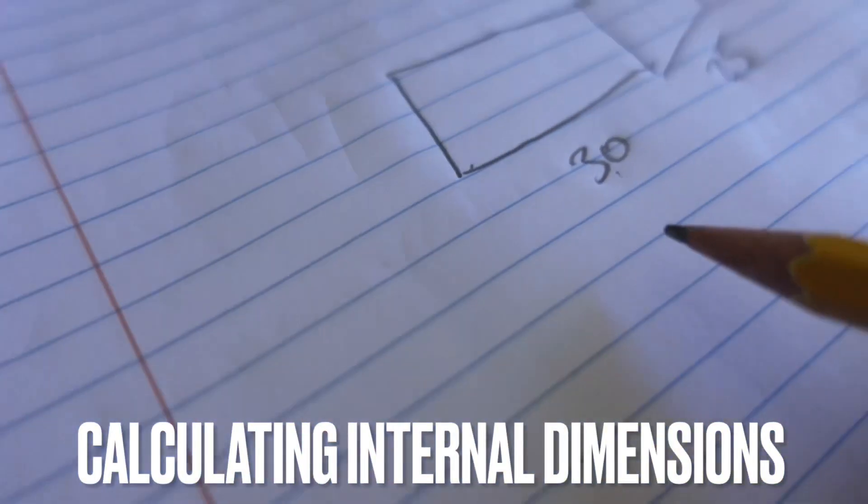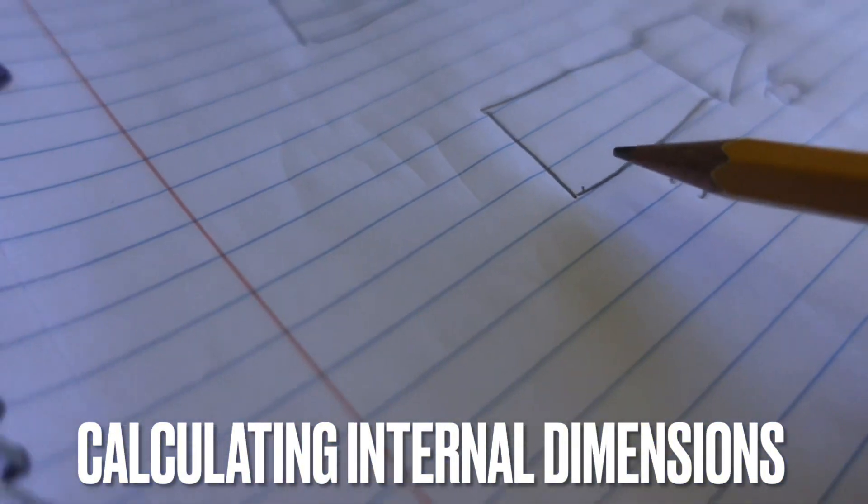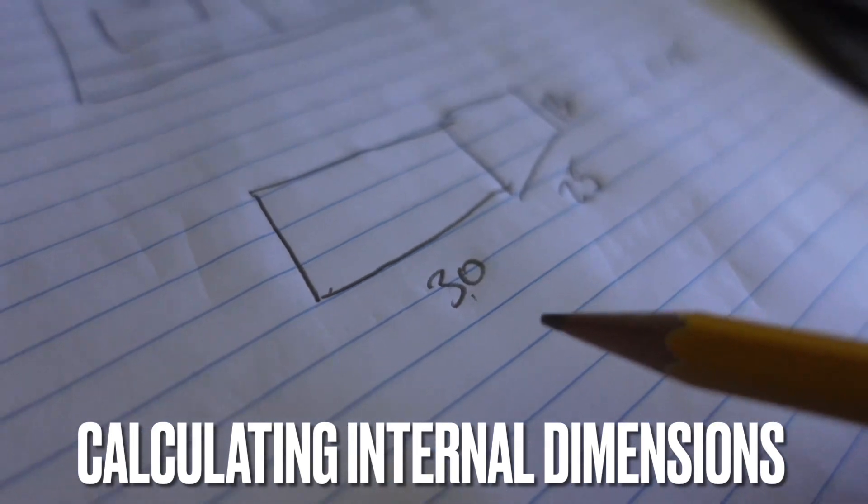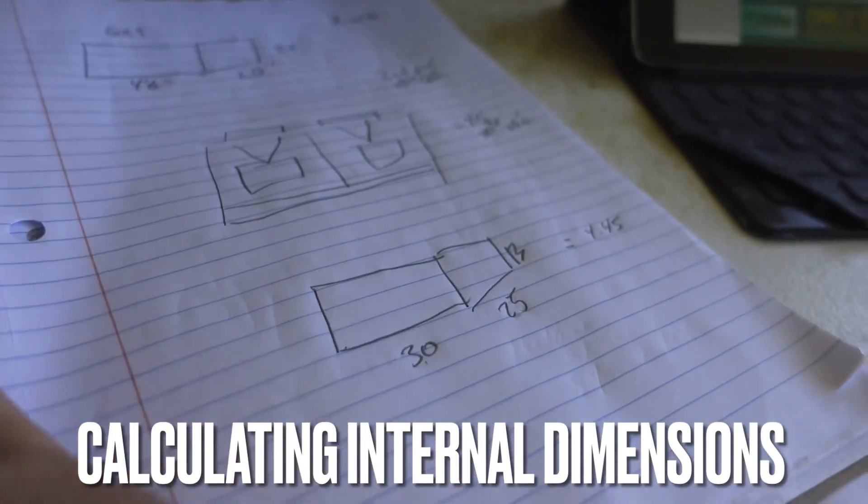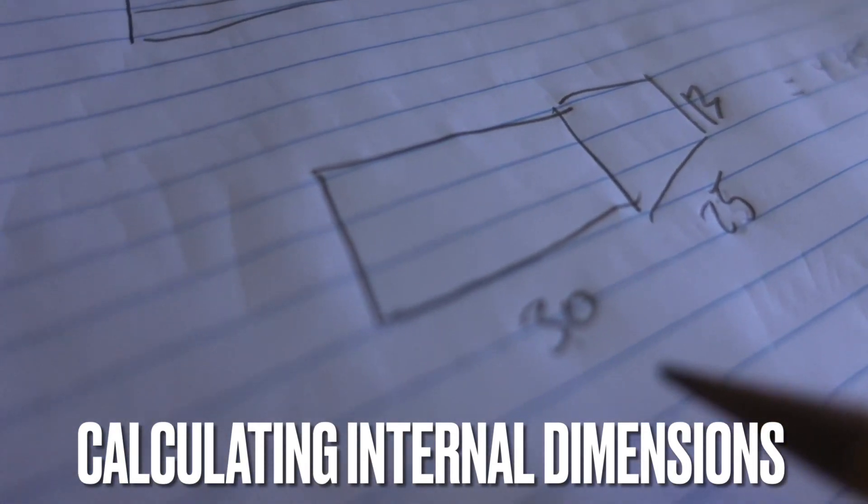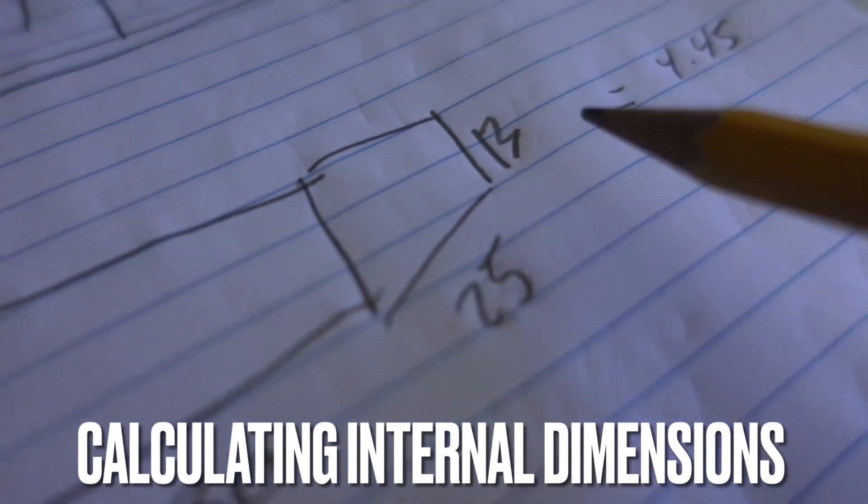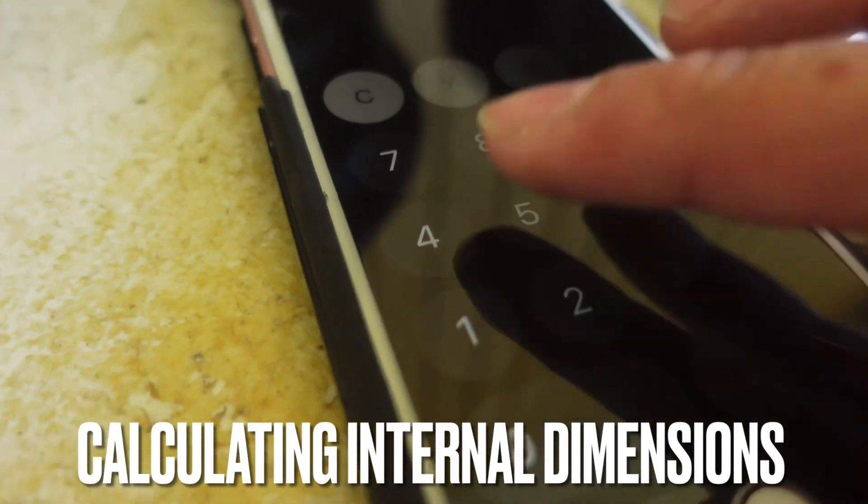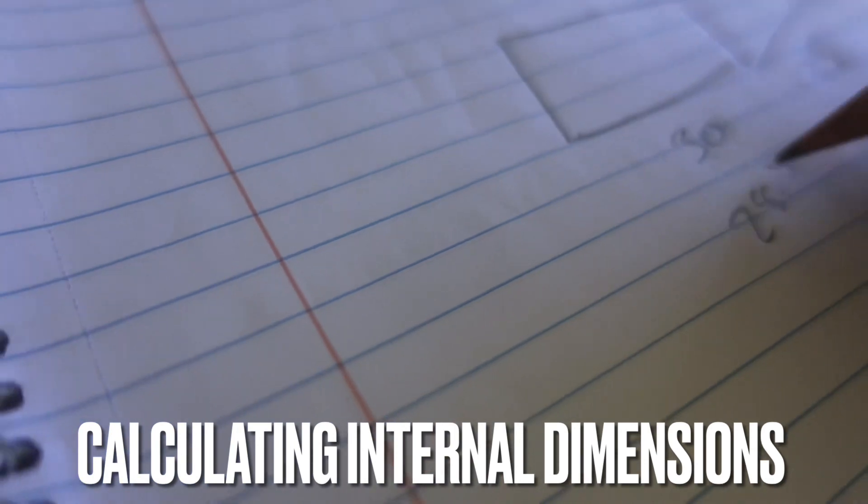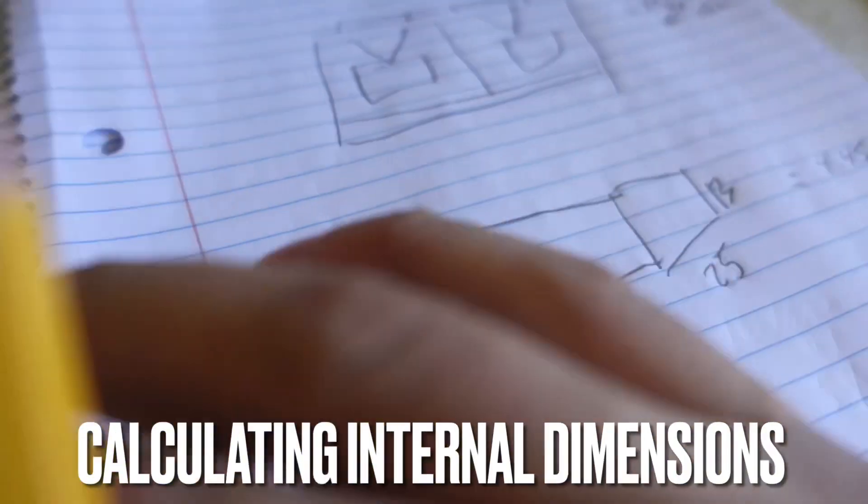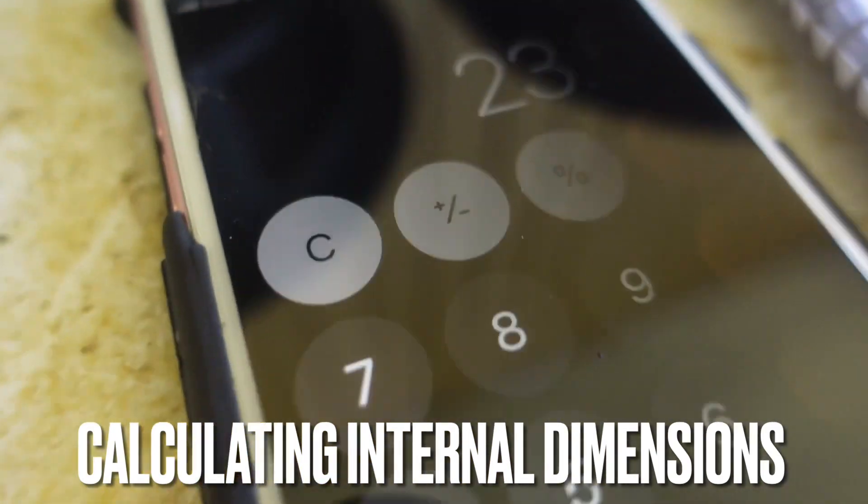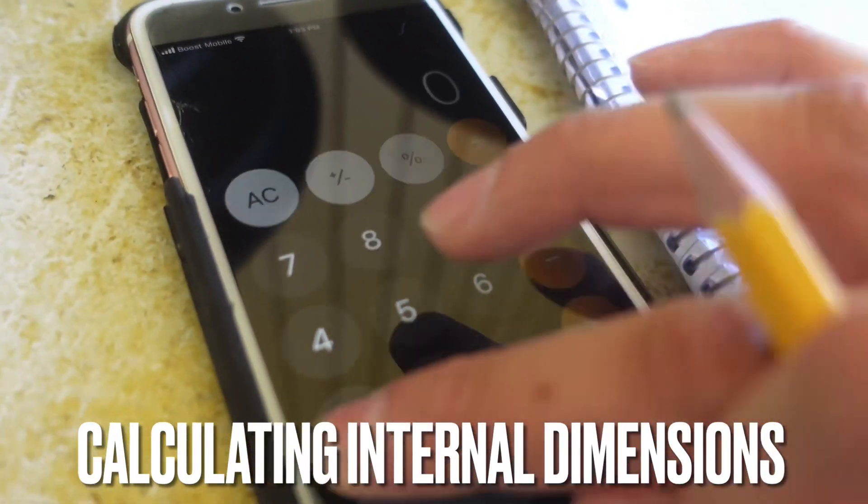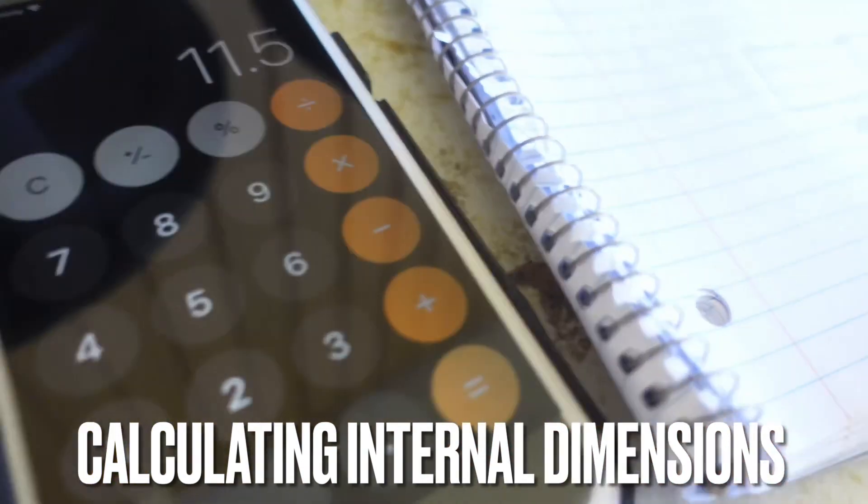To figure out your internal dimensions, we know it's three-quarters-inch thick wood that we're using. We're going to times that by two, which gives us 1.5 when you join them together. To figure out our dimensions, we're going to subtract 1.5 from each one of these numbers to give us our internal dimensions. So 30 subtract 1.5 equals 28.5, then 23.5, and 13 subtract 1.5 equals 11.5.